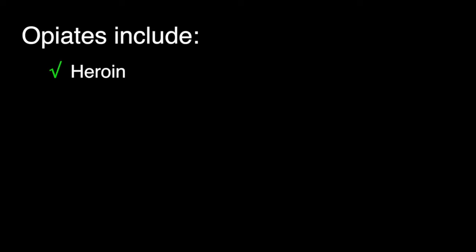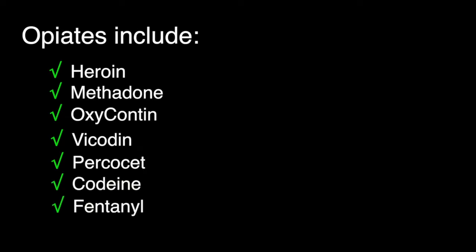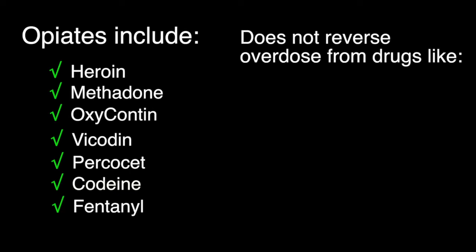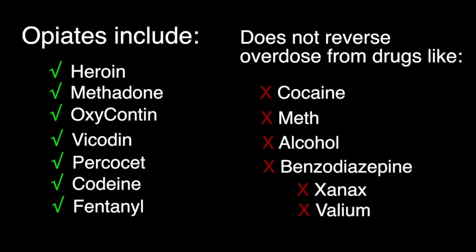Opiates include drugs like heroin, methadone, oxycontin, Vicodin, Percocet, Codeine, and Fentanyl. Naloxone does not reverse overdose from drugs like cocaine, meth, alcohol, or benzodiazepines like Xanax or Valium.